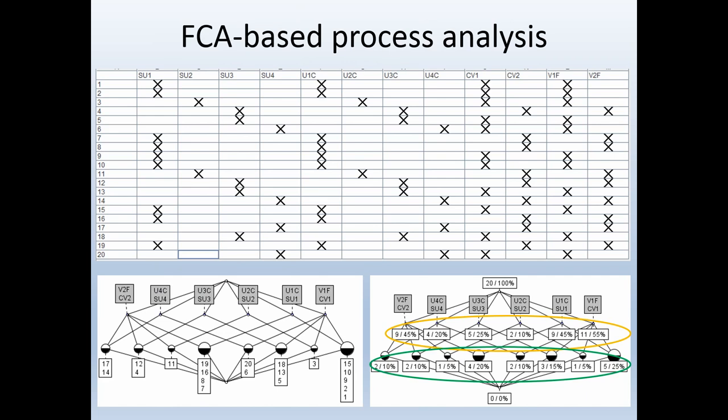But it is also possible to analyze this kind of information with formal concept analysis. In this case, the starting point is a cross table. The attributes are transitions, namely from starting state S to state U1, for example. From starting state S to state U2, from starting state S to state U3, and so on. The crosses indicate which transitions occur for which objects. For example, the transition from event S to event U1 is valid for objects 1, 2, 7, 8, 9, 10, 15, 16 and 19.